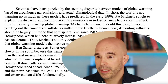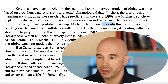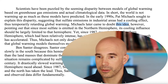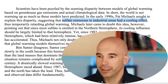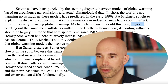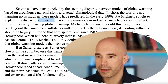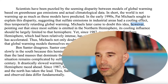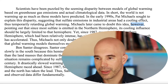"Michaels later came" — there's the subject and verb — and here's another infinitive: "to doubt." "This idea" — what is "this idea" referring to? The idea that sulfate emissions in industrial areas had a cooling effect. So he later came to doubt this idea. The word "however" is there because he's doubting the very idea that he himself suggested. He suggested some idea and later came to doubt that same idea — that's why we have "however," which implies some sort of contradiction or surprise.